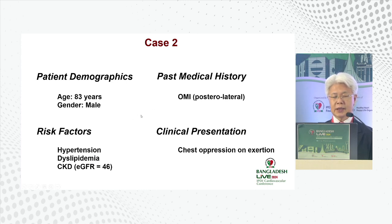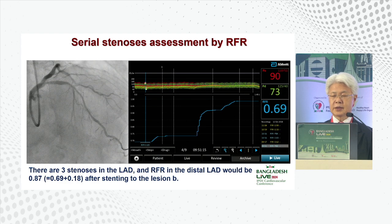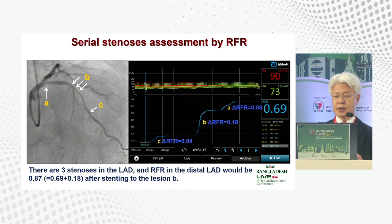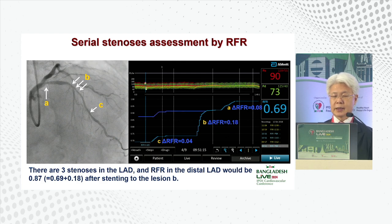The second case is an 83-year-old patient with prior myocardial infarction. On angiography and resting indices (RFR), three regions can be identified — both anatomically and by pressure gradient. If we treat region B distally, the RFR value would increase by 0.18, giving a predicted final RFR of 0.87.